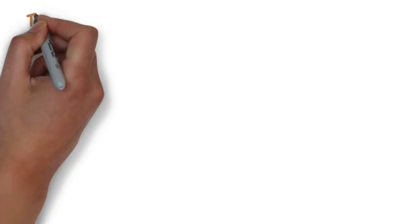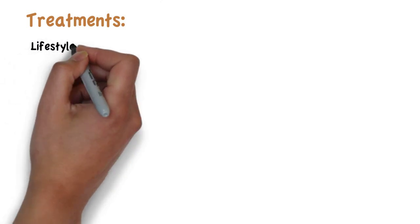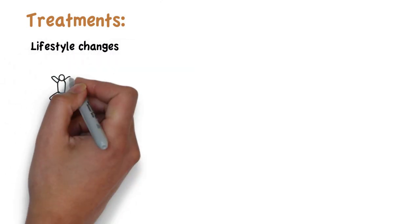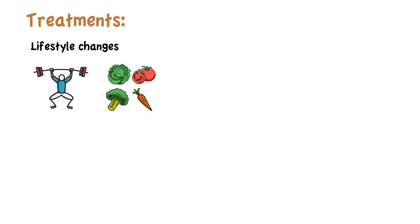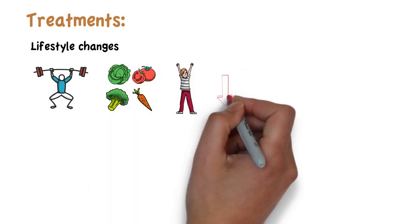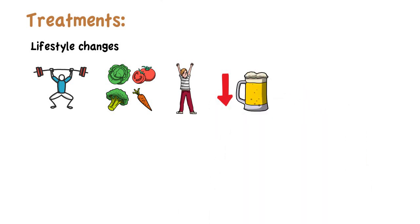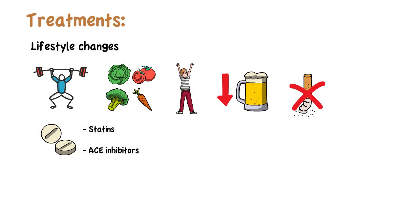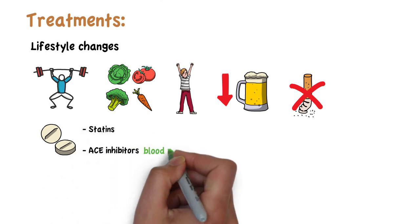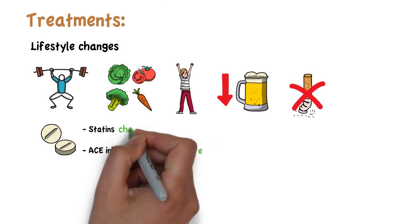The treatments for metabolic syndrome usually include lifestyle changes, such as exercising more regularly, eating a healthier diet, losing weight, cutting down on alcohol, and quitting smoking. Also, some drugs such as statins and ACE inhibitors may be used to control blood pressure and cholesterol levels.